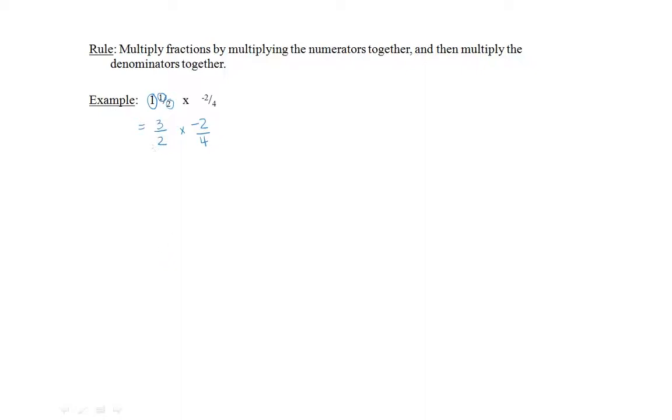Next, we multiply the numerators together. 3 times negative 2 is negative 6, and multiply the denominators together. 2 times 4, which is 8.